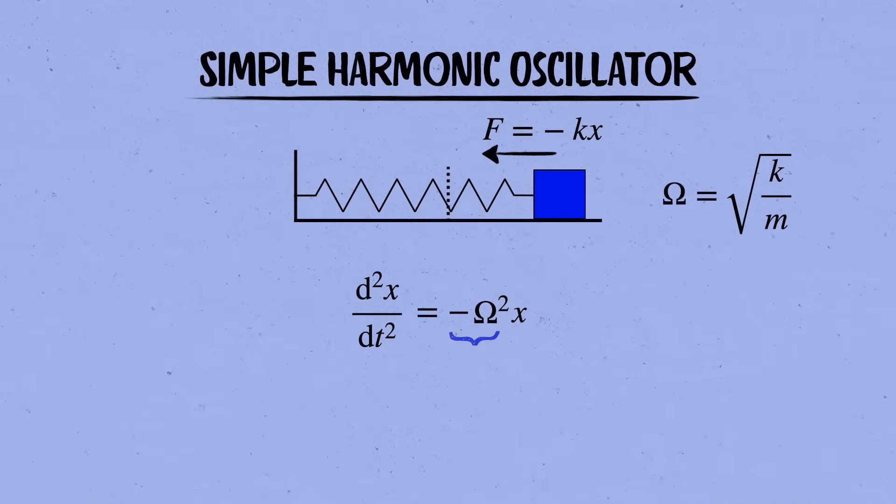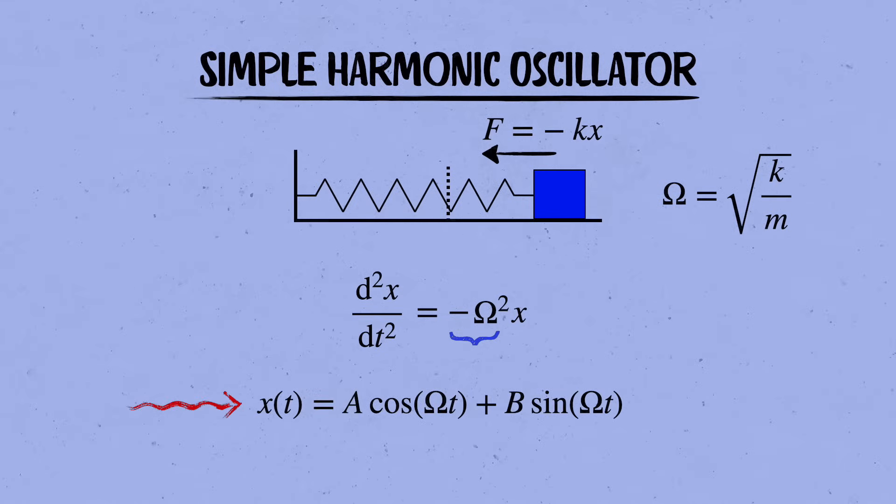That's exactly the property of sine and cosine. And so the general solution of this equation is x of t equals a times cosine omega t plus b times sine omega t, where a and b are numbers that depend on what the block is doing at t equals zero. How far do we pull it out and or how fast did we kick it? I go through those derivatives and all this material in more detail in the notes, which you can get at the link in the description.